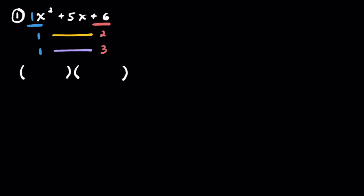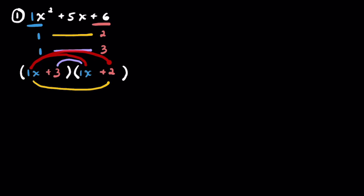Setting up the two binomials, with 1x and 1x in the front. The yellow line pairs up the outers — so we'll say plus 2. And the purple line are the inners — that's plus 3. You can totally FOIL this out to verify: 1x times 1x is 1x squared, 1x times 2 is 2x, 3 times 1x is 3x — those combine to get 5x. And 3 times 2 gives 6. So the factored form is (x + 2)(x + 3).